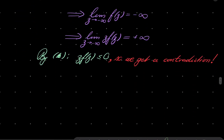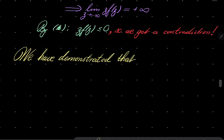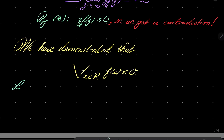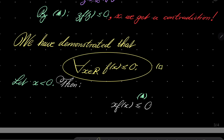We have demonstrated that for every real number x, f of x is less than or equal to zero. I'll call this condition square. Now let x be a negative number. Notice the following chain of inequalities: we know that x times f of x is less than or equal to zero by condition triangle.